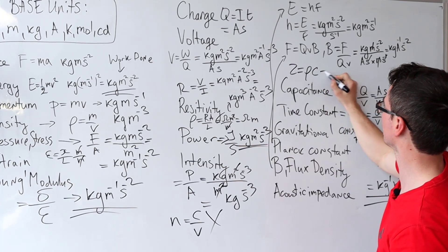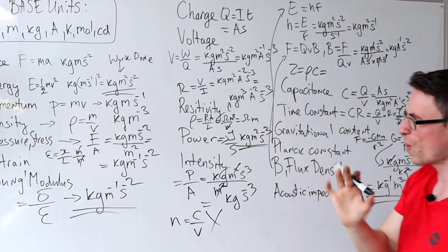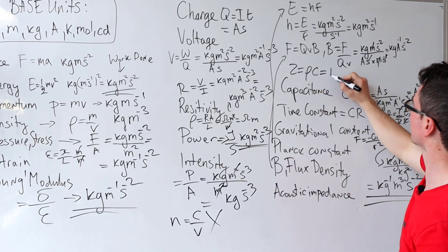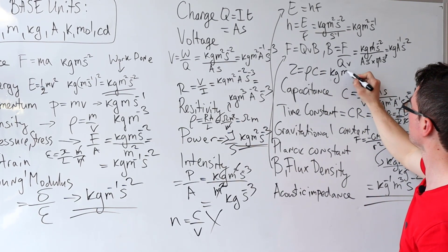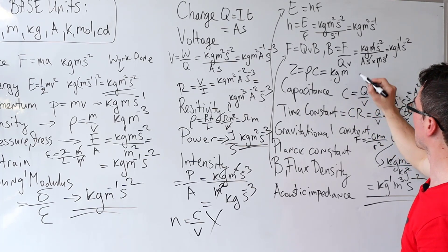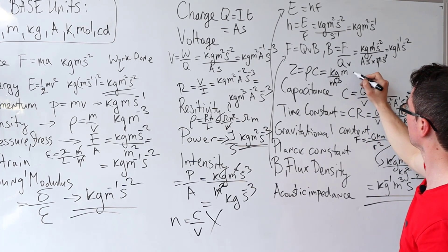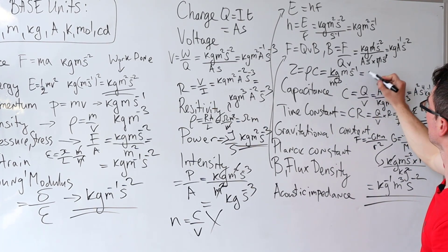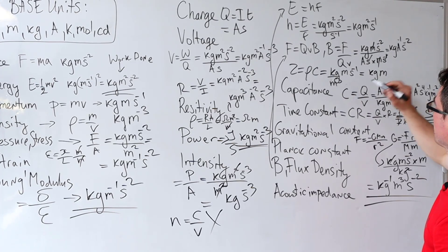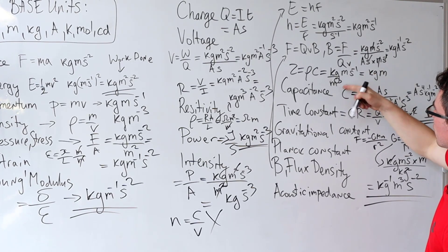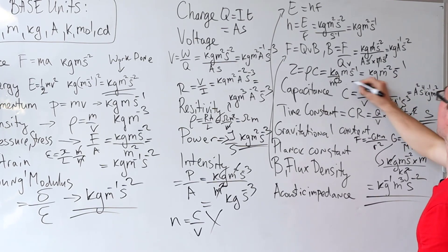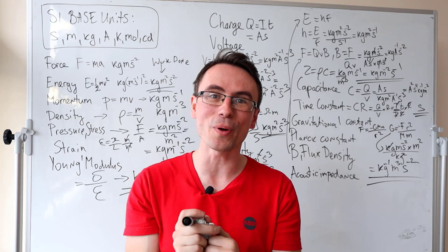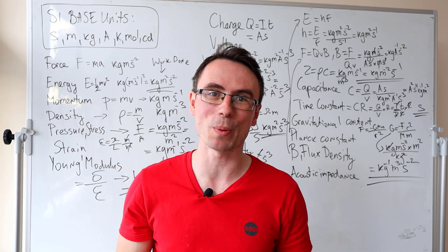Acoustic impedance — the formula is ρ times c, where ρ is density and c is speed. Density is kg m⁻³ and speed is m s⁻¹. Multiplying gives kilograms per meter squared per second, so the base unit is kg m⁻² s⁻¹.